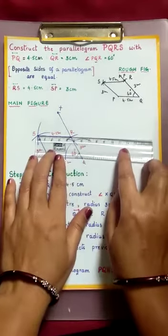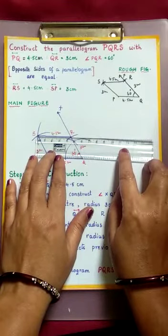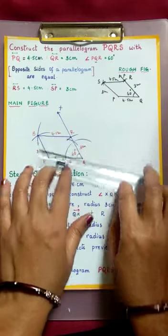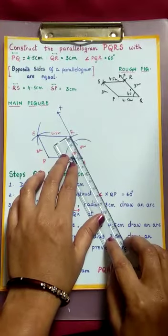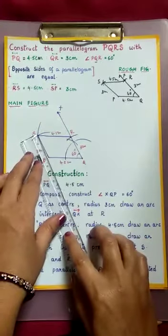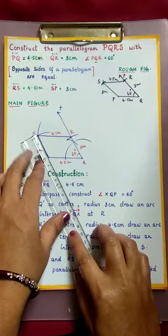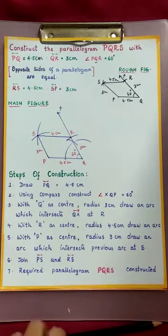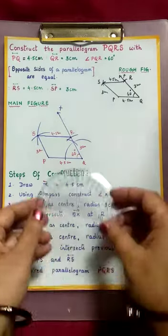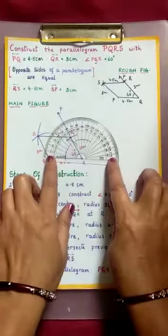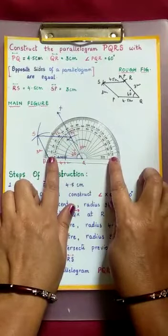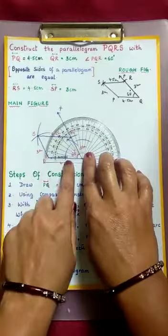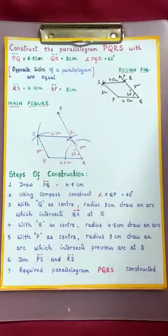Join RS and PS. The opposite sides of a parallelogram are equal. If you want to check this angle, take a protractor. Exactly we have 60 degrees. So we have done the perfect construction.